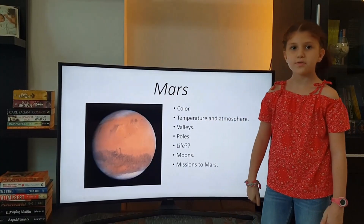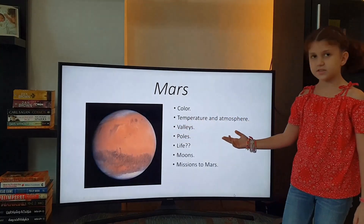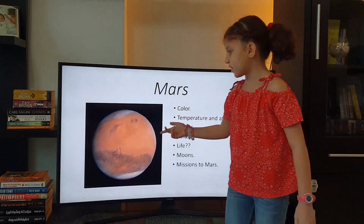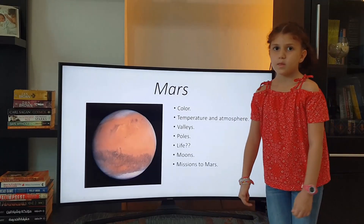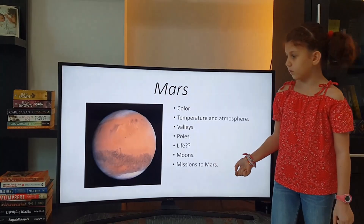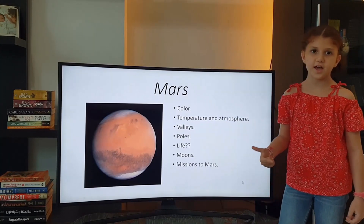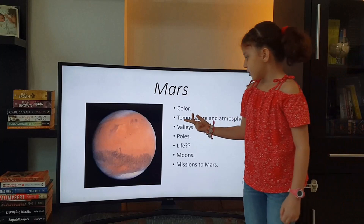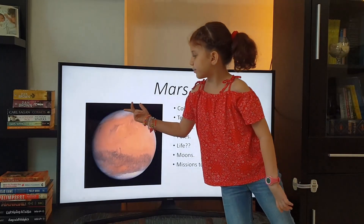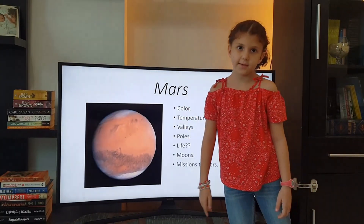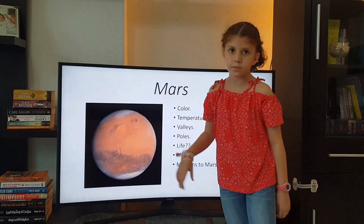Mars is the fourth planet from the Sun and the planet we will go on next. Its color is red due to iron oxide in the soil — it's called Mars, and the name comes from the Greek god of war because of its bloody color. Its two moons are named after the Greek gods of fear and terror. Mars's temperature is freezing cold because of its thin atmosphere and because it's very far away from the Sun.